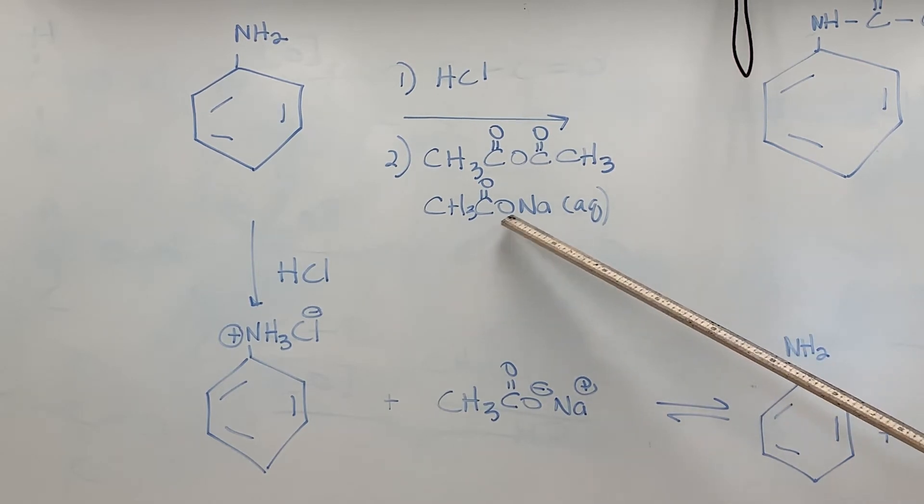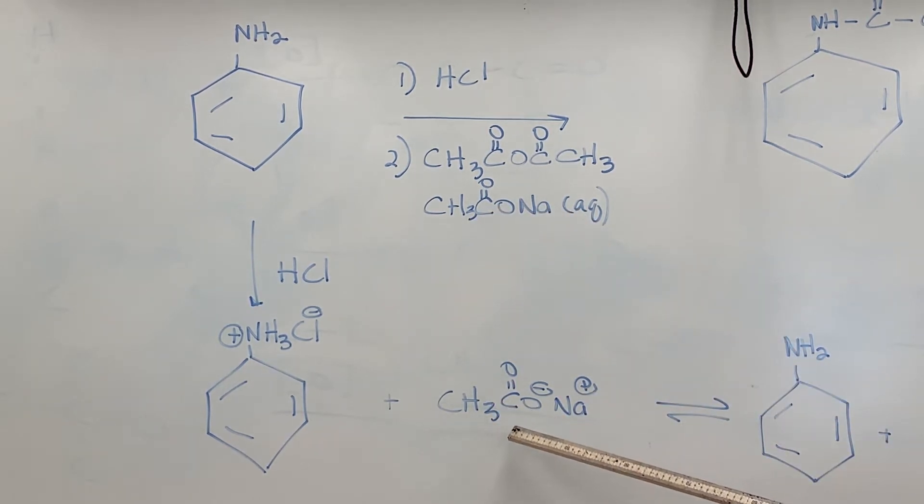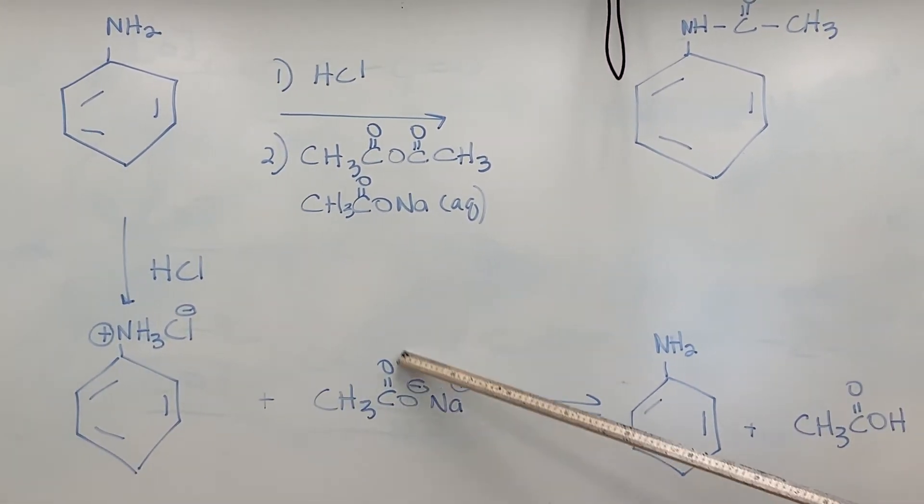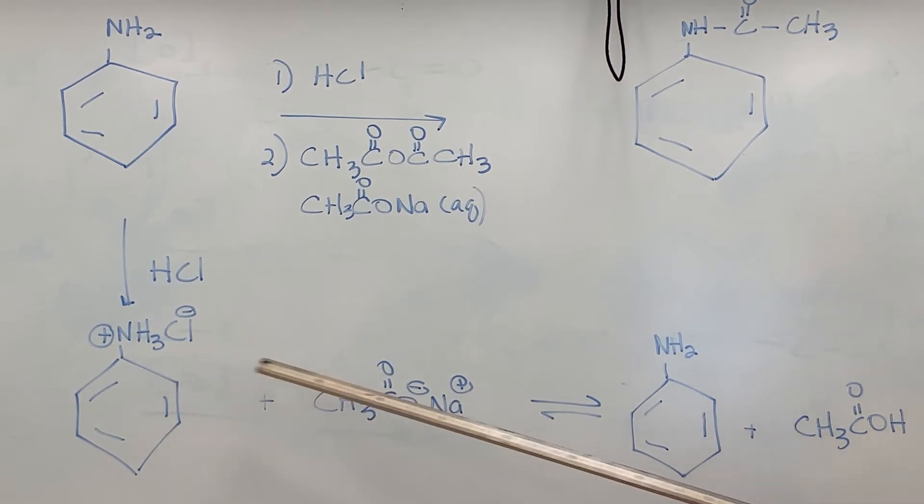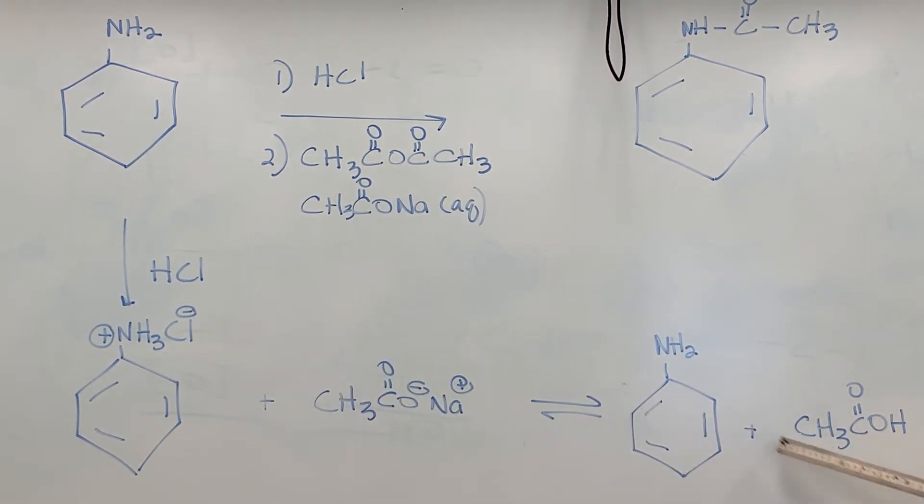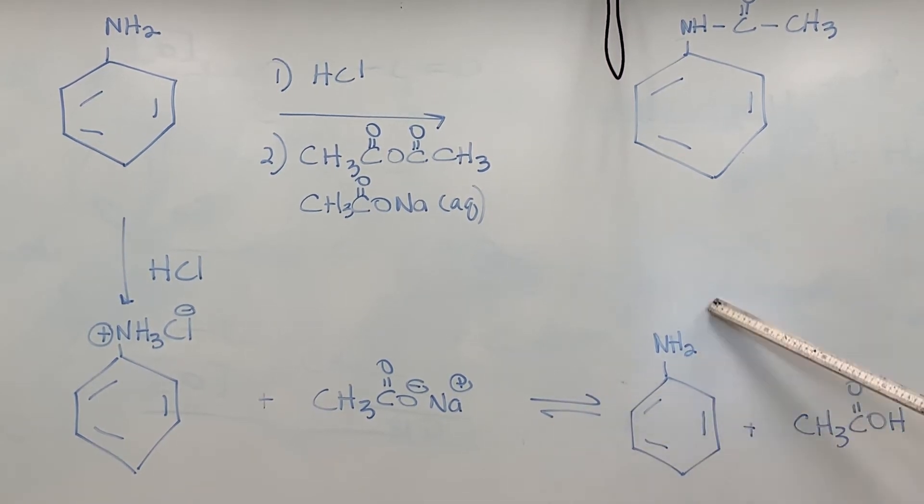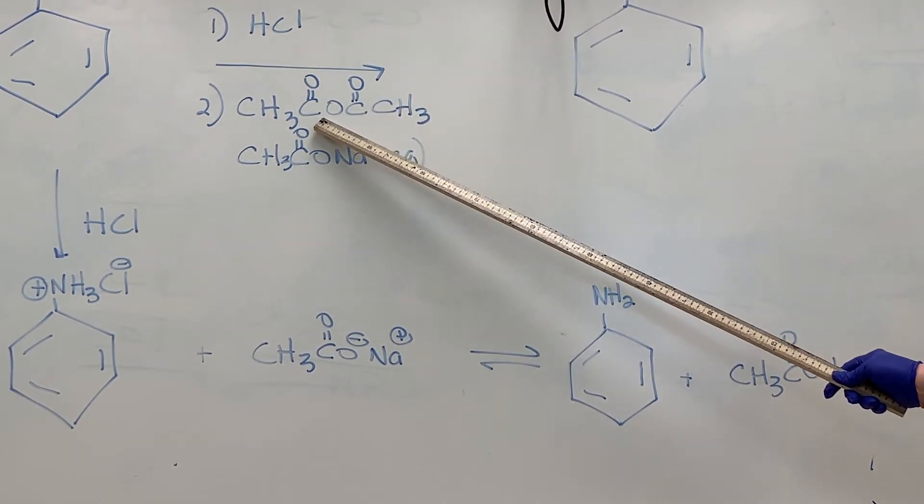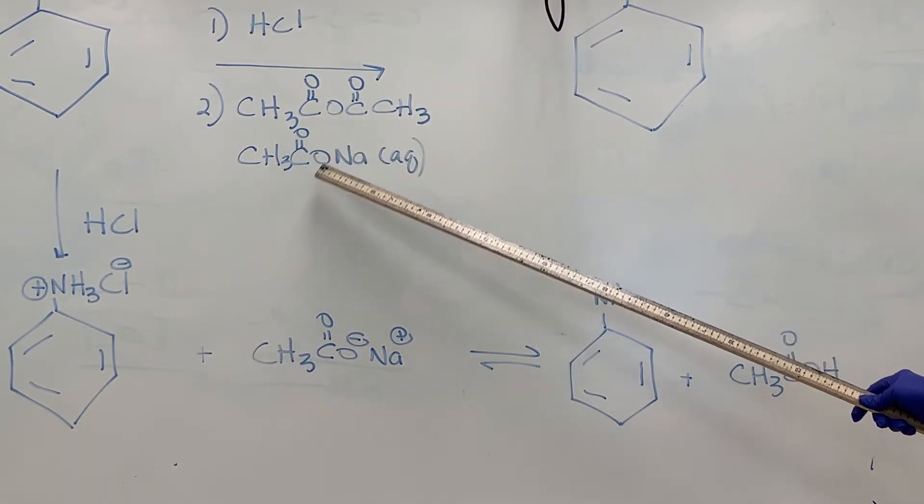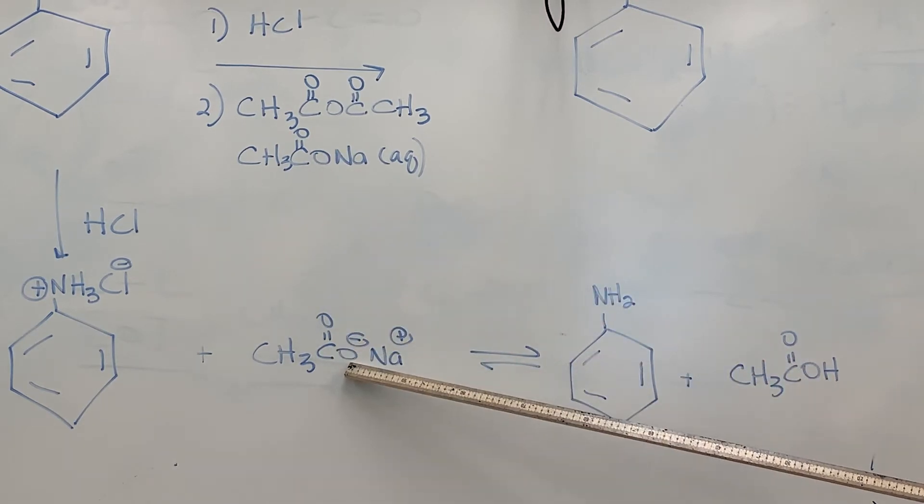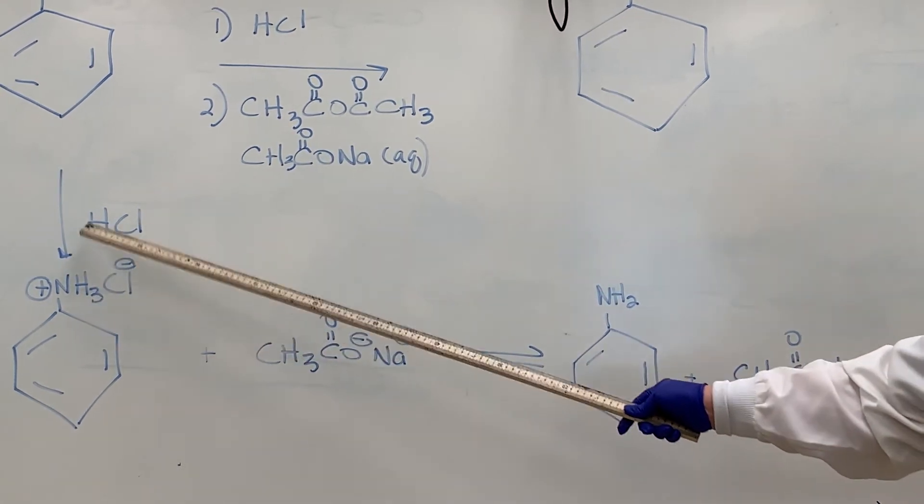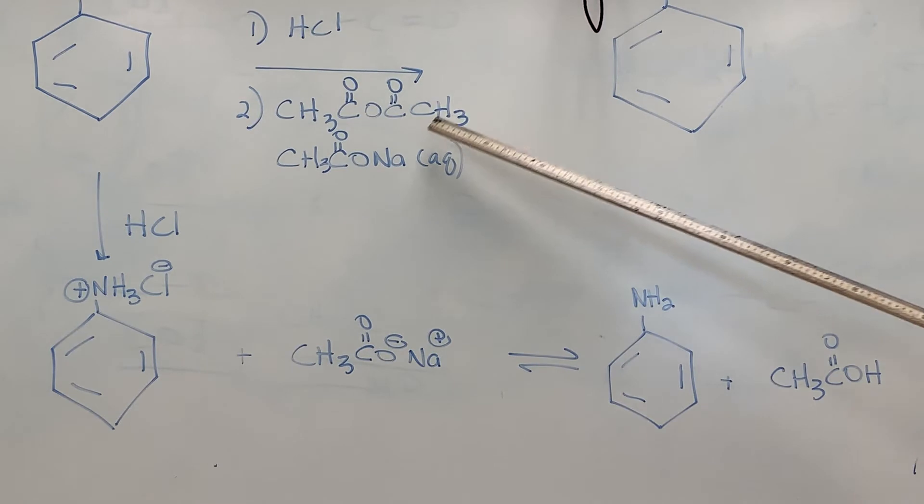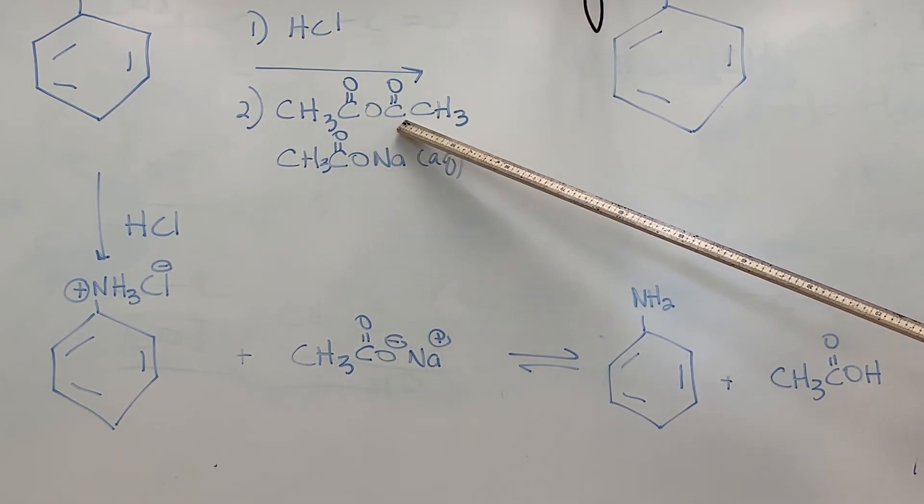So the purpose of the sodium acetate trihydrate is that when we add that to the anilinium solution, this acts as a base and pulls off one of those protons to reform the aniline and acetic acid. This reaction is in equilibrium, so as soon as this is regenerated, it will react almost instantaneously with the acetic anhydride. The sodium acetate trihydrate removes that hydrogen from the anilinium chloride so that we can reform the aniline because this is what has to attack the carbonyl group of the acetic anhydride.